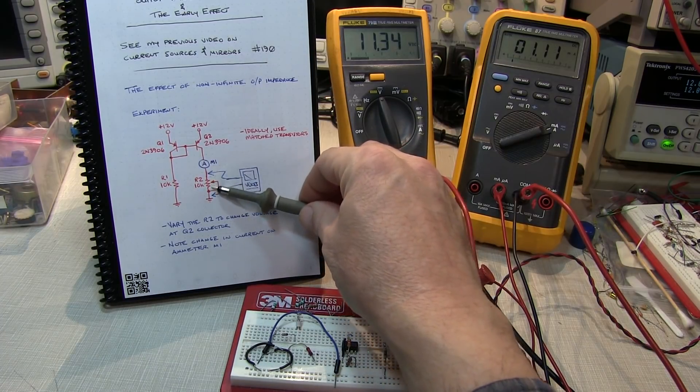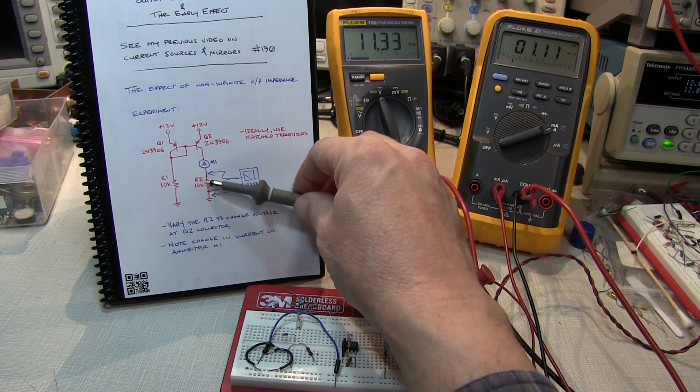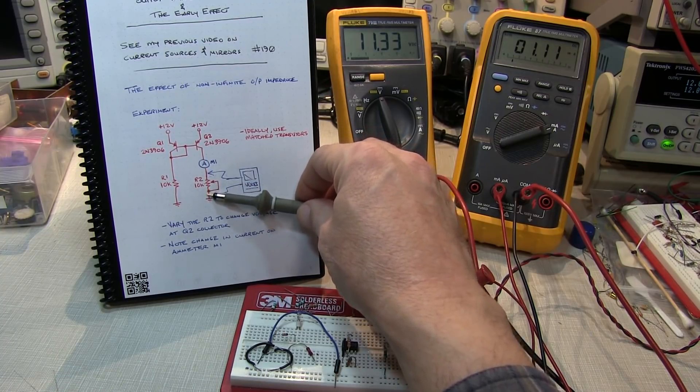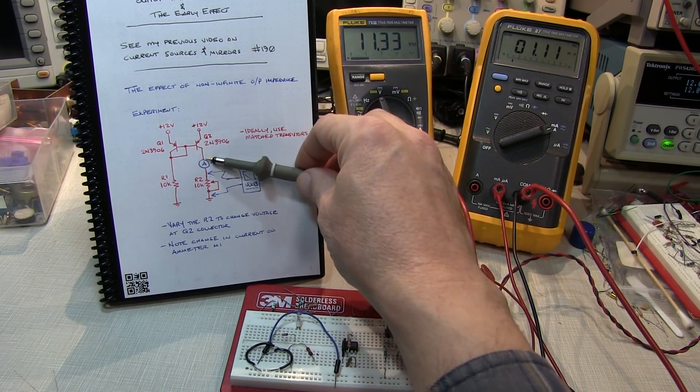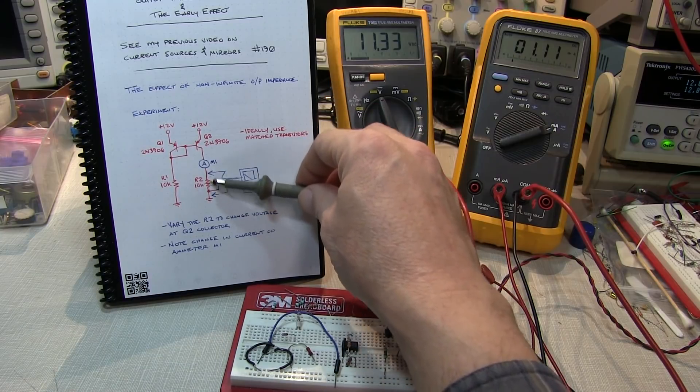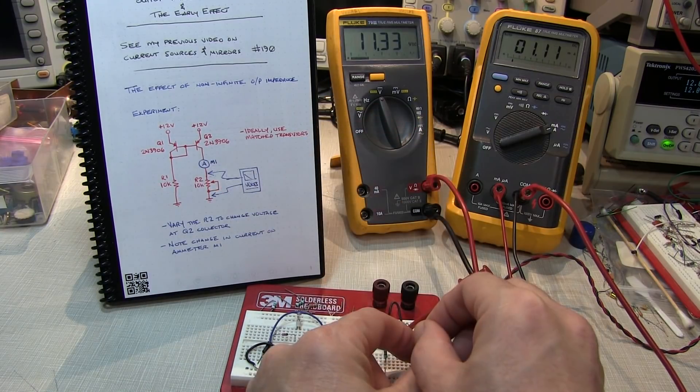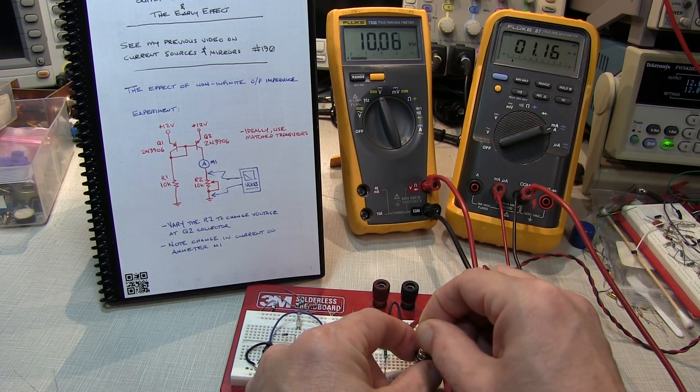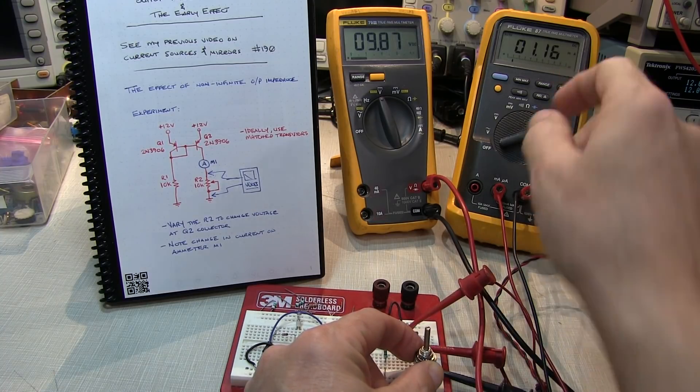As I start dialing down the value of R2, the amount of the voltage drop across R2 is going to be less, so I'll have more voltage across the transistor and less voltage across the load. We'll start dialing down R2, and we'll see the voltage going down. We'll see the current, though, starting to increase.